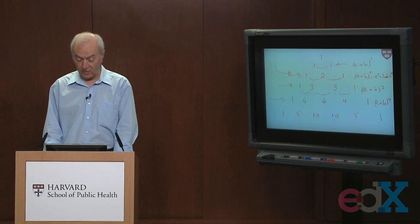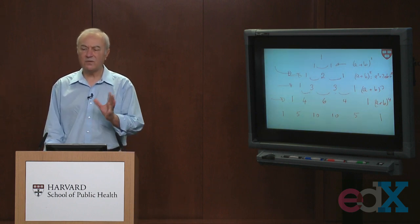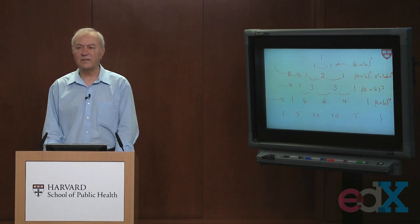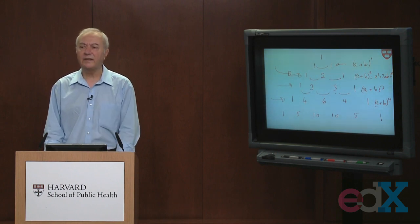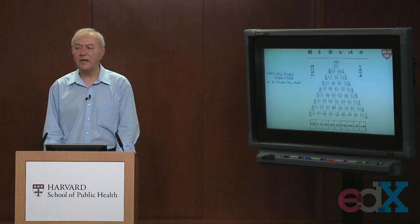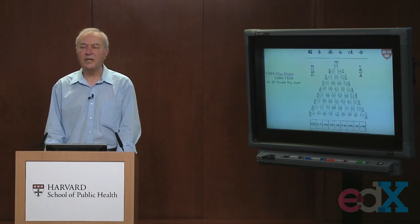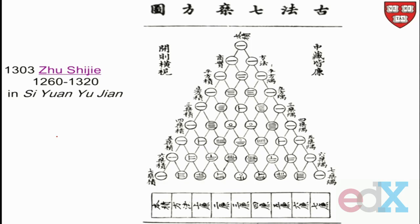Now, as I said, this is called, we call it the Pascal triangle, even though it was known even in Europe before Pascal's time. Tartaglia, for example, had this. But even it appeared really in Persian in the 11th century or so. So here it is in a Chinese text in the 14th or 13th, I should say, beginning of the 14th century in a Chinese text.